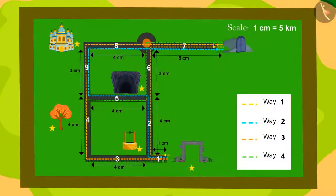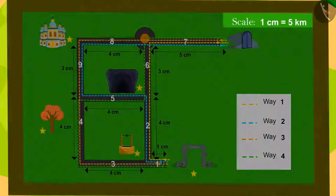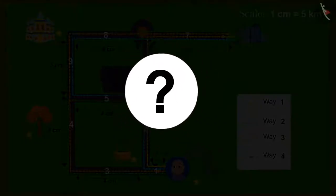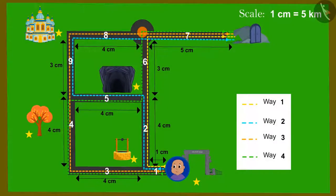Here, the length of paths of Ulta Pulta village is written in centimeters. If Bablu is standing near the gate going in, can you find the shortest way to get out of it using the scale written on the map?